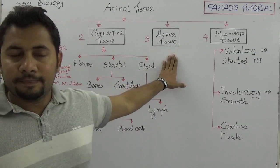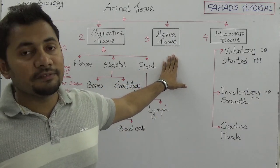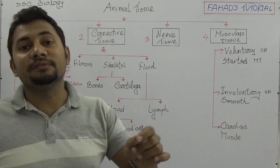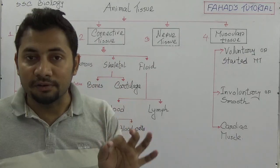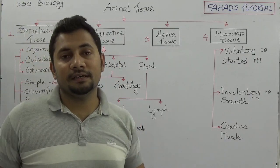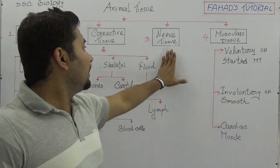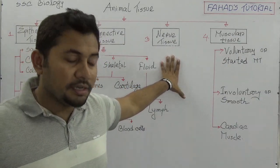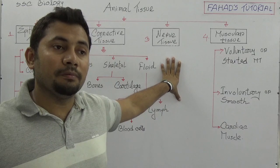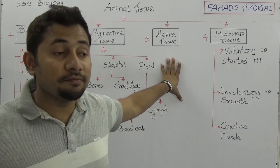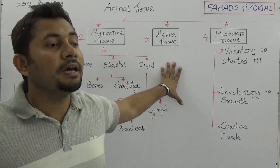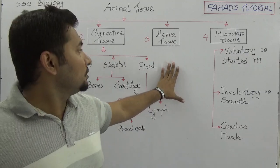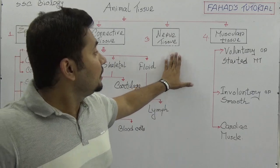Nerve tissue has no divisions as such, but when we say nerve tissue we must know about neurons. Neurons require another class to explain more elaborately — covering the functions of neurons, the structure of neurons, and the functions of synapses.